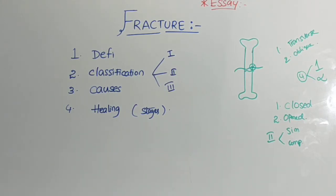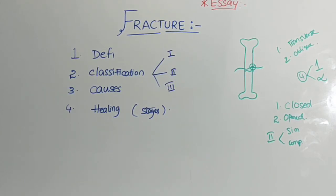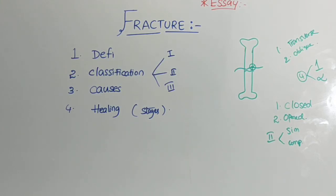Next, move on to classification. There will be a lot of classifications; I'll give you the simplest form among all of them. First: closed and open fractures. In a closed fracture, the fracture point will not have any communication with the external environment like skin and soft tissues. But in an open fracture, the complete opposite — there will be communication between the fracture point and the external environment, that is skin and soft tissues.